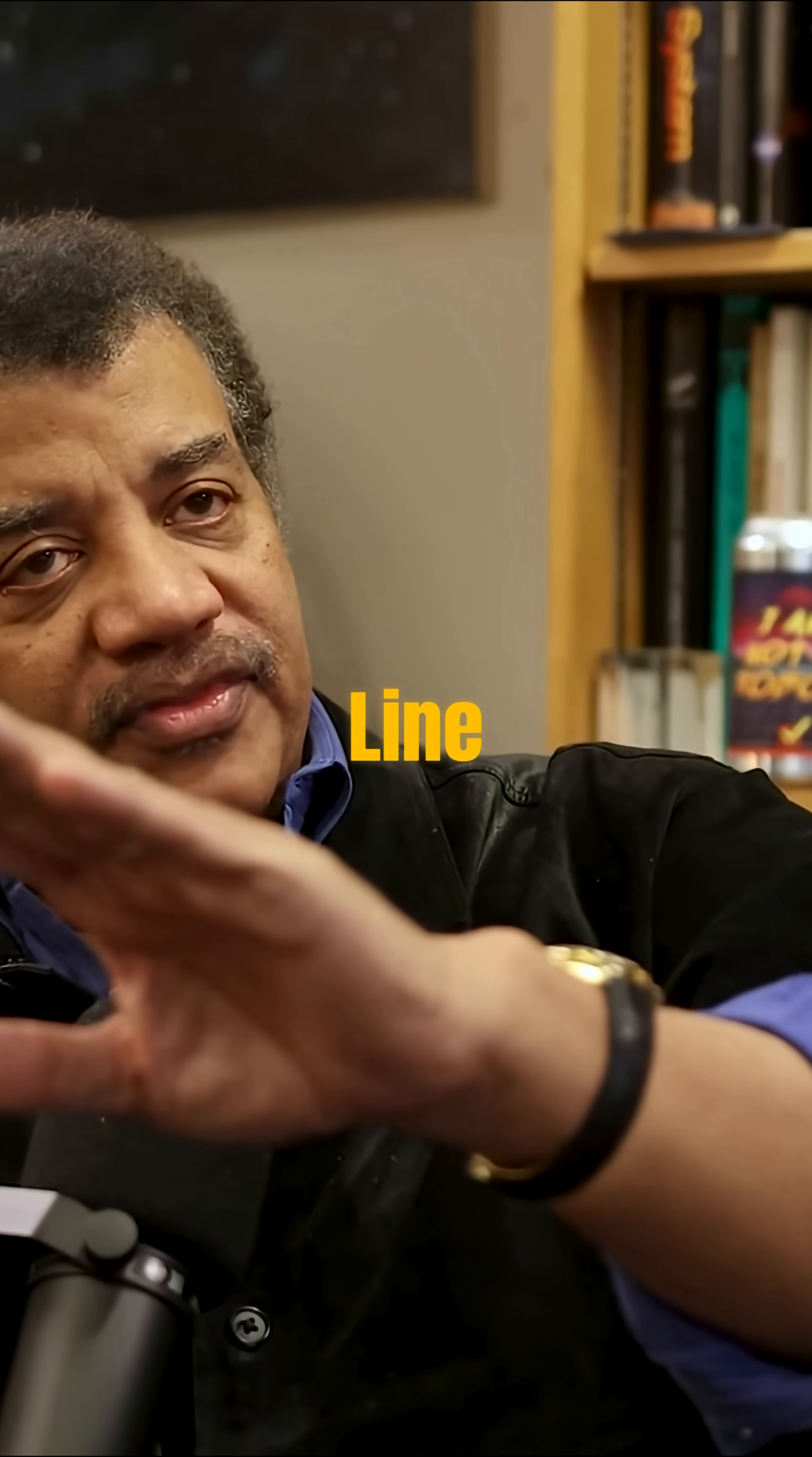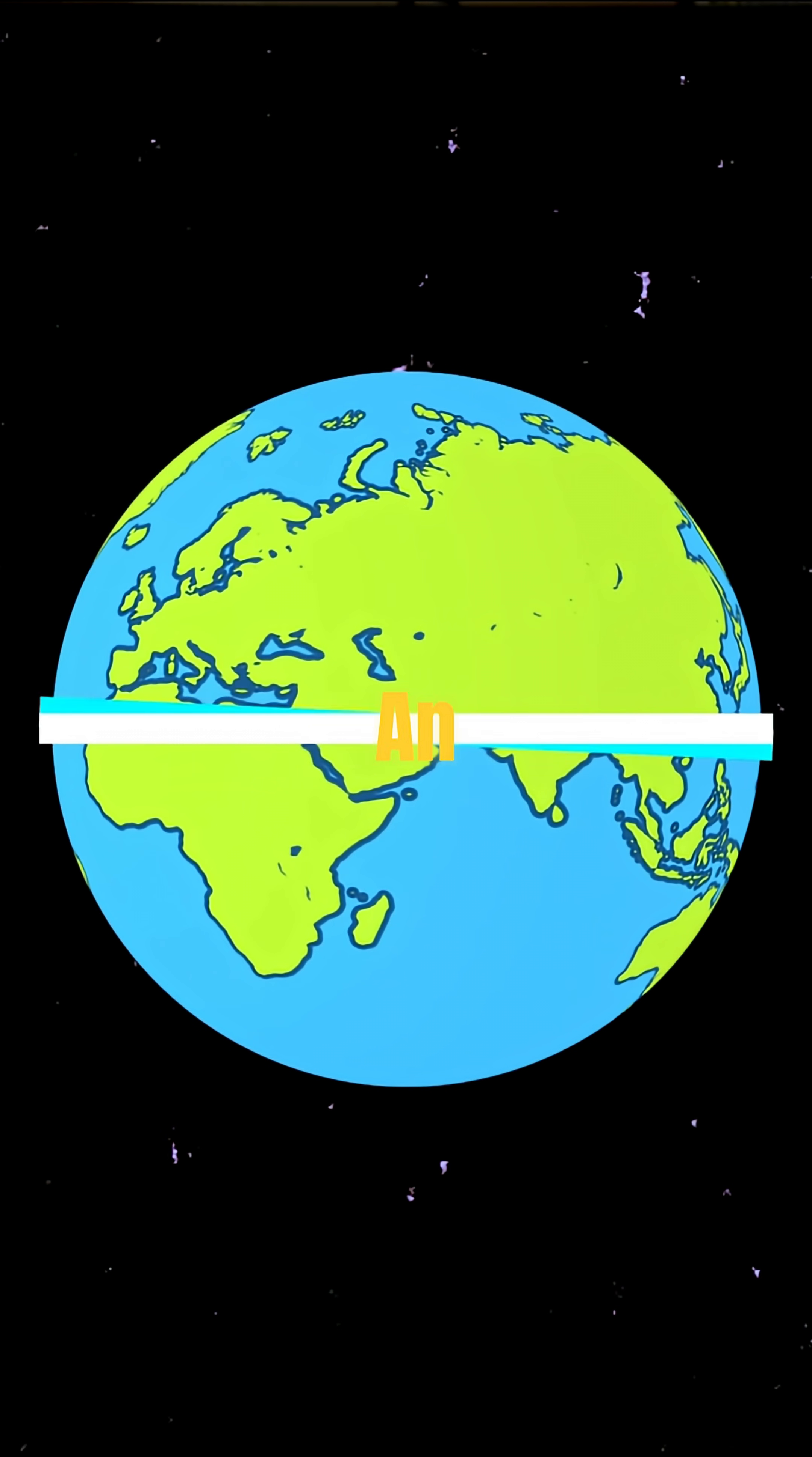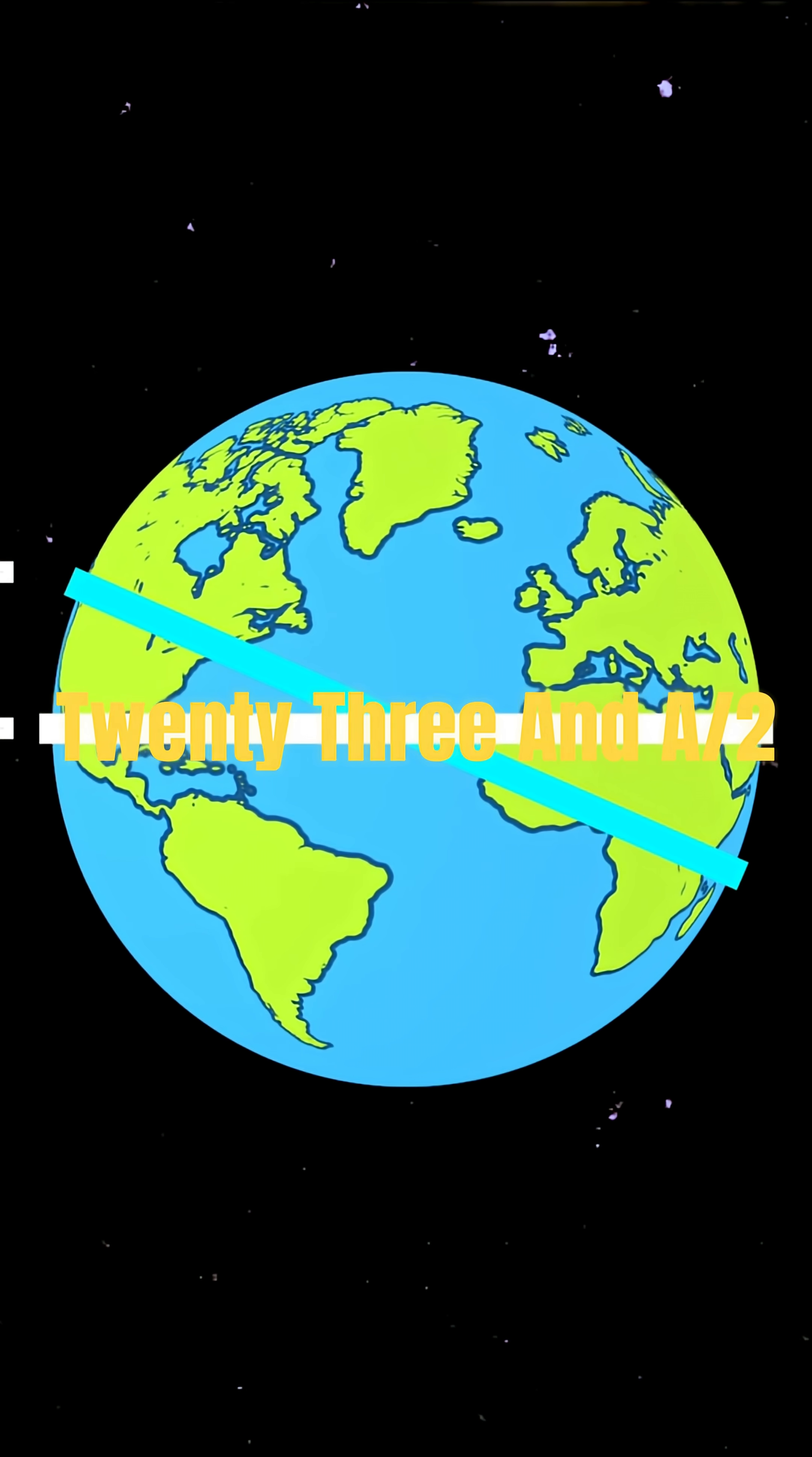There's another line that crosses the celestial equator. So think of it as two rings at an angle to each other. This ring crosses the celestial equator at an angle of 23 and a half degrees.